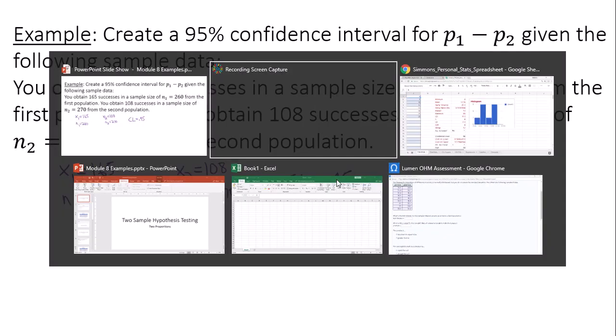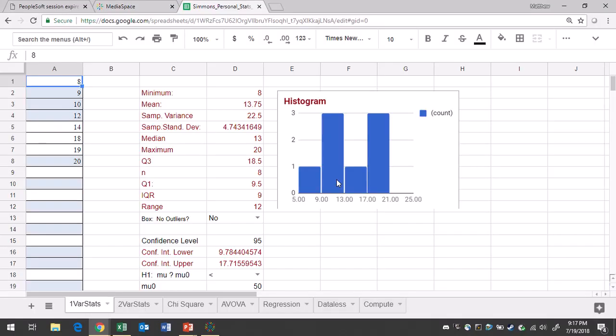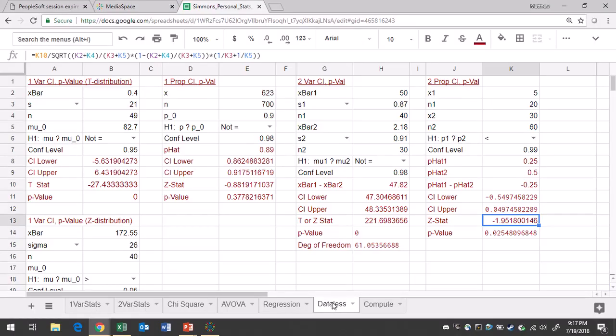This is what you type in the Google Sheets. Google Sheets you'll go to the data list tab, the two prop CI P value region.